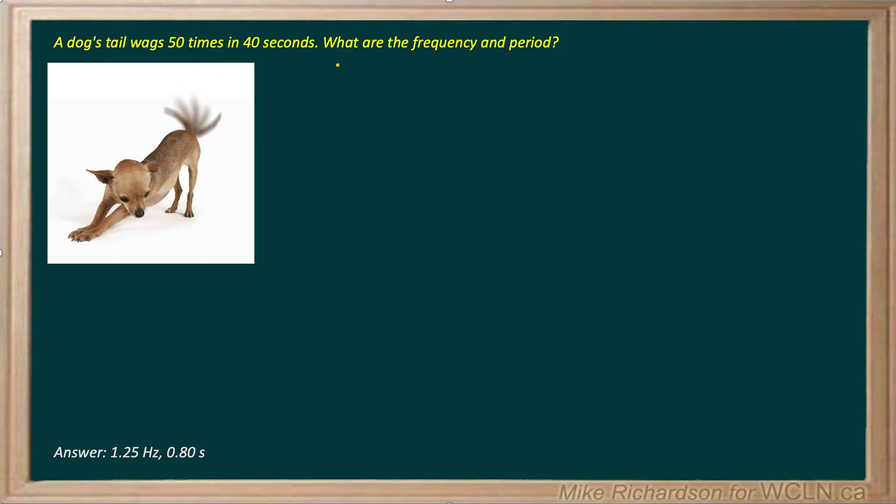A dog wags 50 times in 40 seconds. What are the frequency and period of his tail? Now frequency by definition is the number of waves or oscillations divided by time.